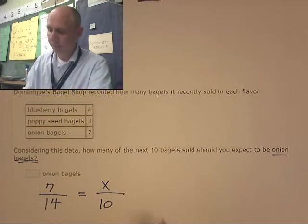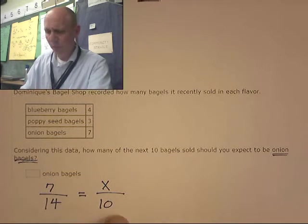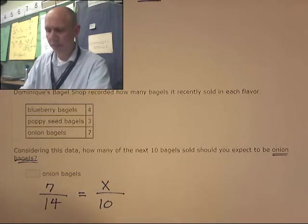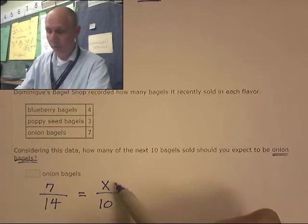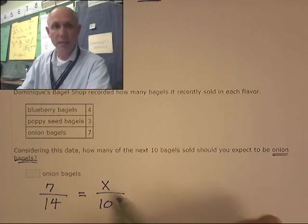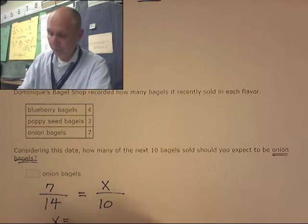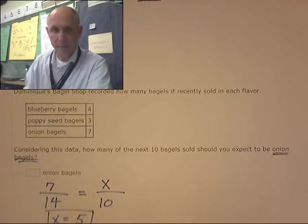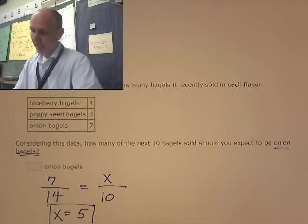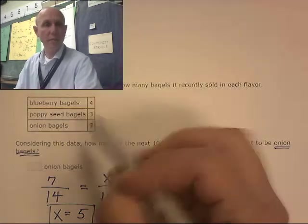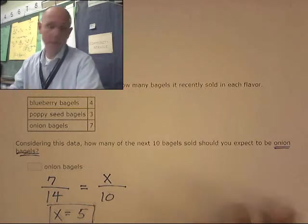Let's solve this. Seven over 14, that's a half. X over 10, that has to be a half also. So, X is five. So, if I sell 10 bagels, half of them would be onion, which makes sense. Half of them are onion.